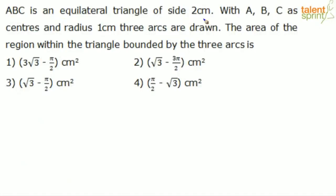ABC is an equilateral triangle of side 2 cm. With A, B, C as centers and radius 1 cm, three arcs are drawn. The area of the region within the triangle bounded by the three arcs is: Option 1: 3√3 - π/2, Option 2: √3 - 3π/2, Option 3: √3 - π/2, or Option 4: π/2 - √3.